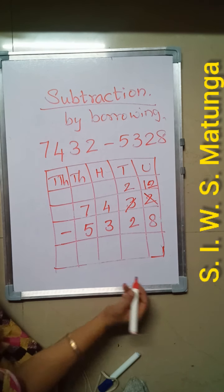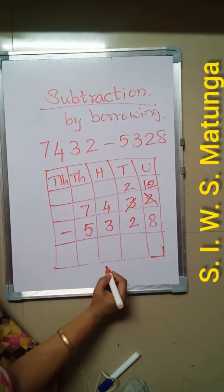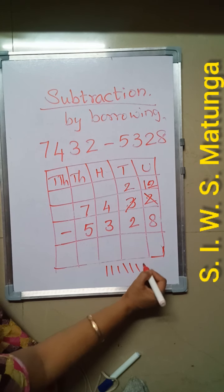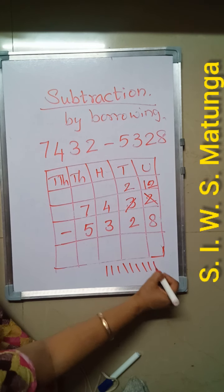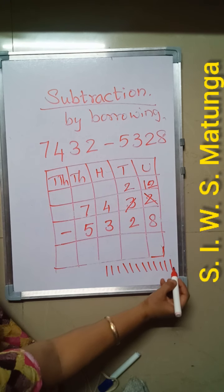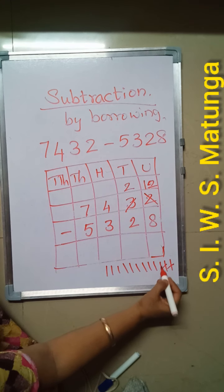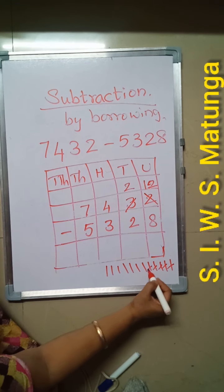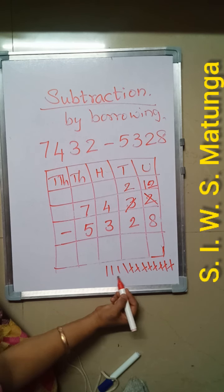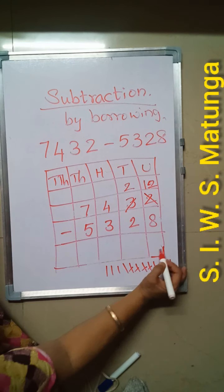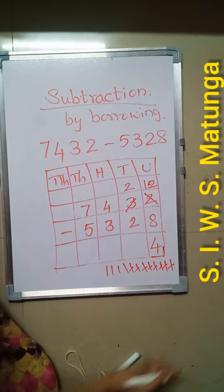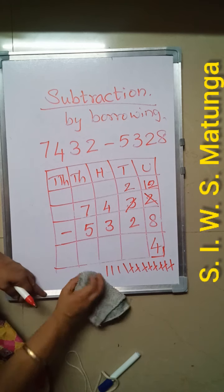Now, 12 minus 8 — how will we do it? Put 12 tally marks, then cross out 8 of them. What is left? 4 is left. Write 4 in the units place.